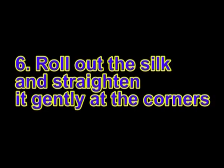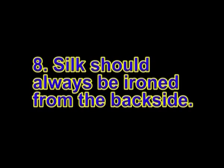Use several layers when using dark or printed silks. Roll out the silk and straighten it gently with the corners. Iron it: silk should always be ironed on the backside and should always be still slightly moist. Check your iron settings — do not iron silk too hot. Always remember that silk is a protein structure, much like human hair, and heat will damage it. Observe these considerations and you will enjoy your silk products for a very long time.